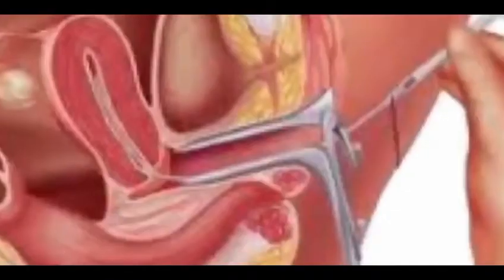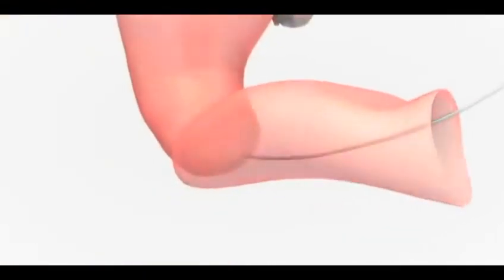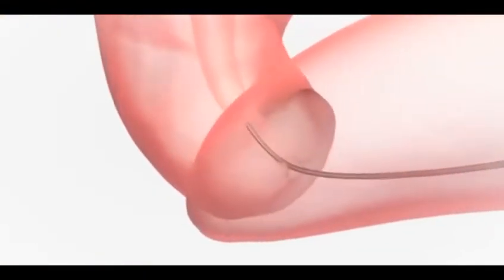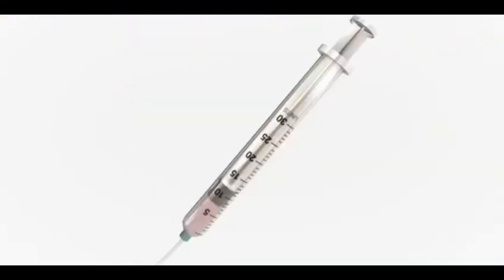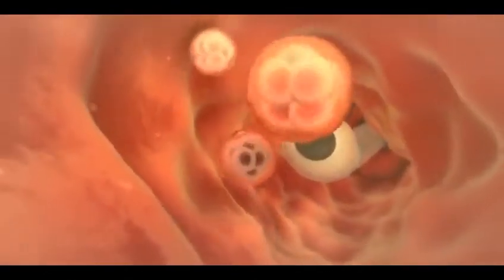A tool called speculum is inserted into the vagina so that the cervix is clearly visible. Fluid containing embryos is taken into a syringe. The syringe is attached to a long catheter, which is then inserted into the uterus via the cervix. Embryos are then injected inside.